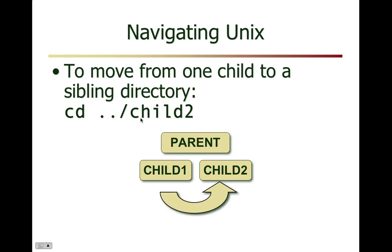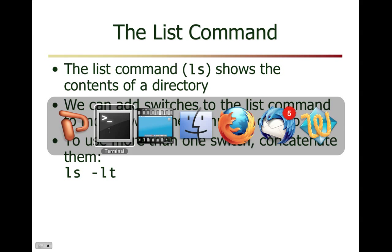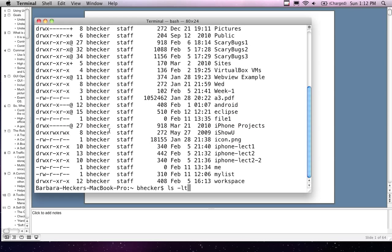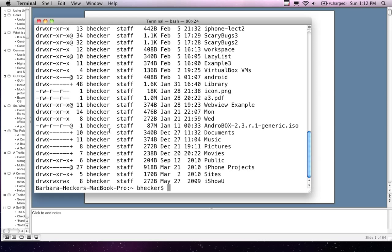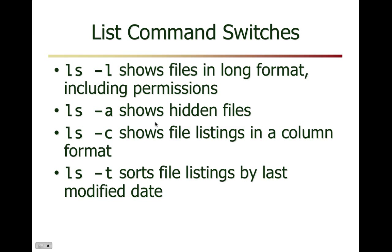To move from a grandchild to a parent directory, type cd space dot dot forward slash dot dot, going back two steps instead of one. To move from one child to a sibling directory, go dot dot to take you back up to the parent, then type the name of the sibling directory you want — so you go back up to the parent and then come back down to the other child.